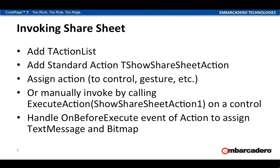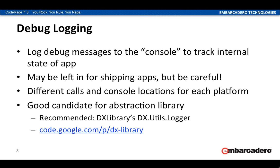You can then assign that action or manually invoke it by calling ExecuteAction with the name of your share sheet action — in this case 'ShowShareSheetAction1'. You have to call that on a control, so for example with Button1 you'd say Button1.ExecuteAction('ShowShareSheetAction1'). It's important that you handle the OnBeforeExecute event of the action — that's where you assign the text message and bitmap for the share sheet.